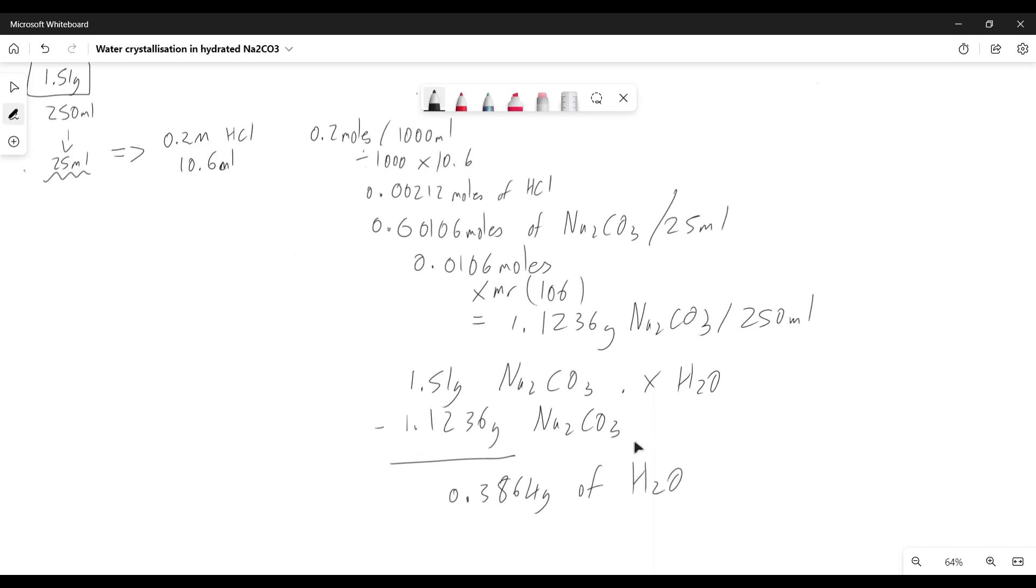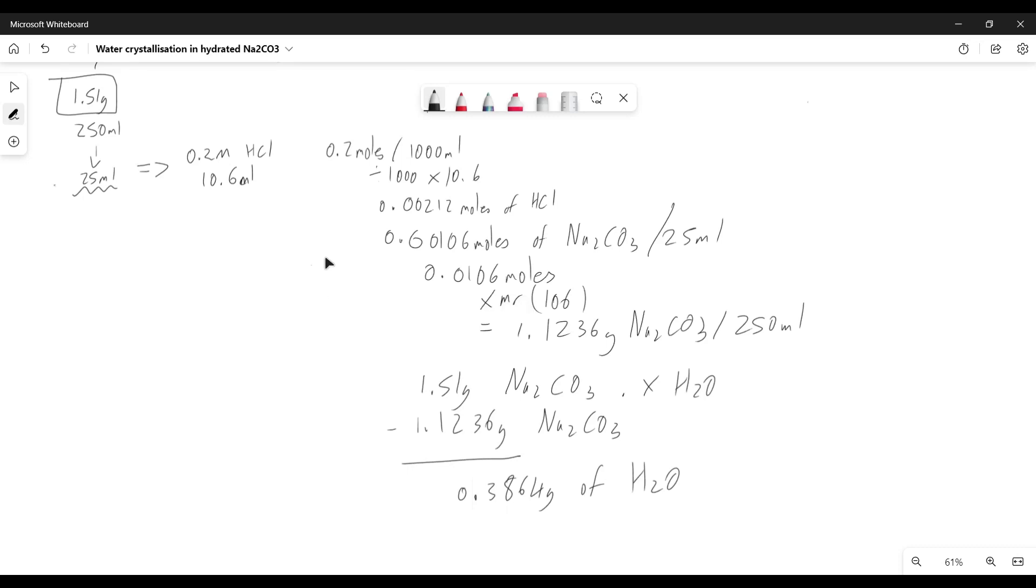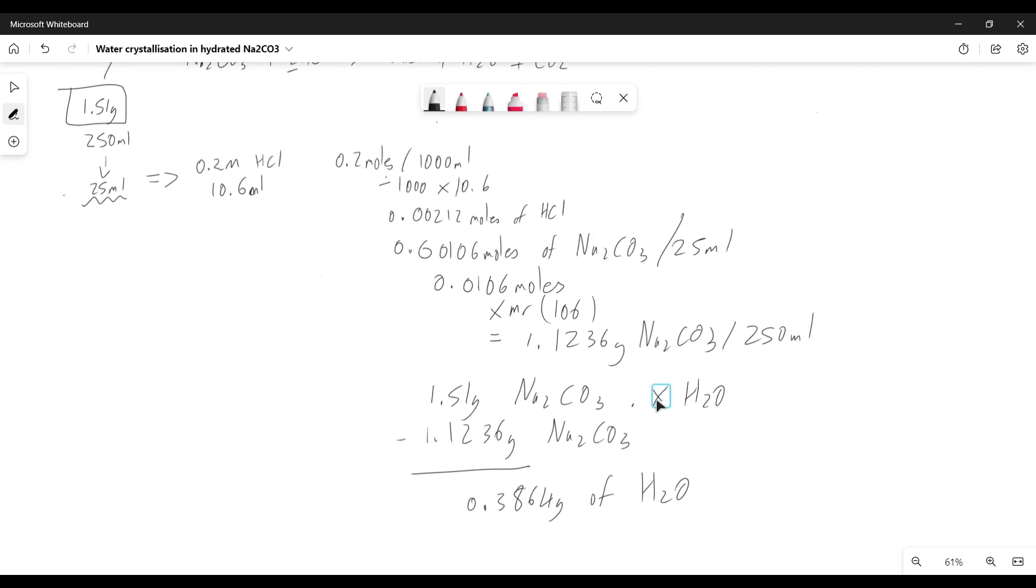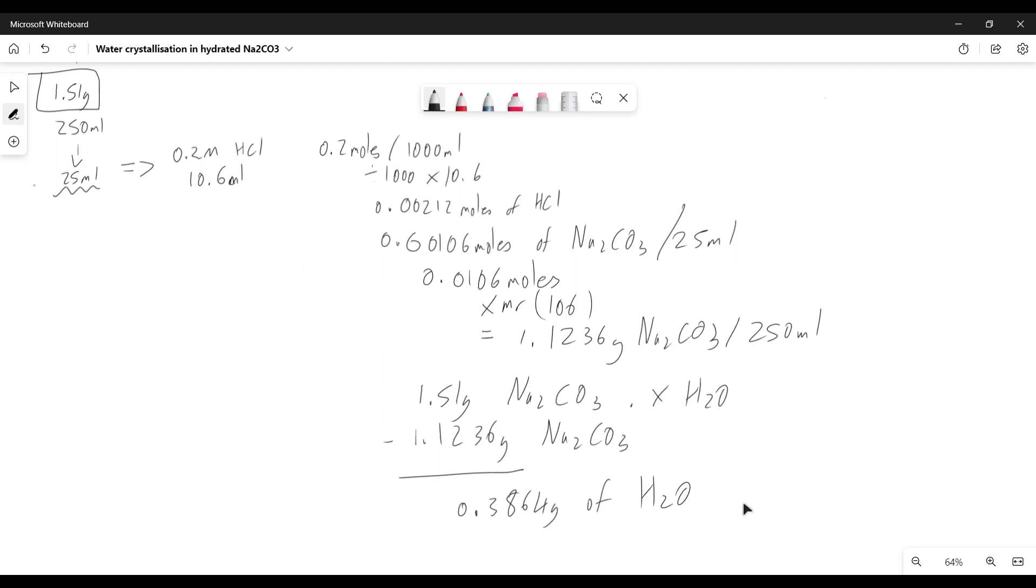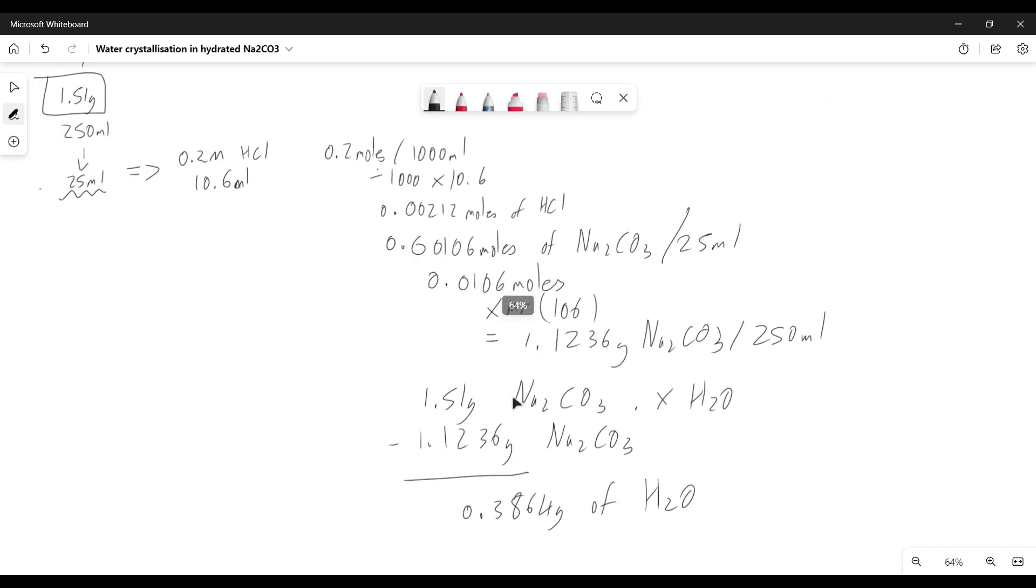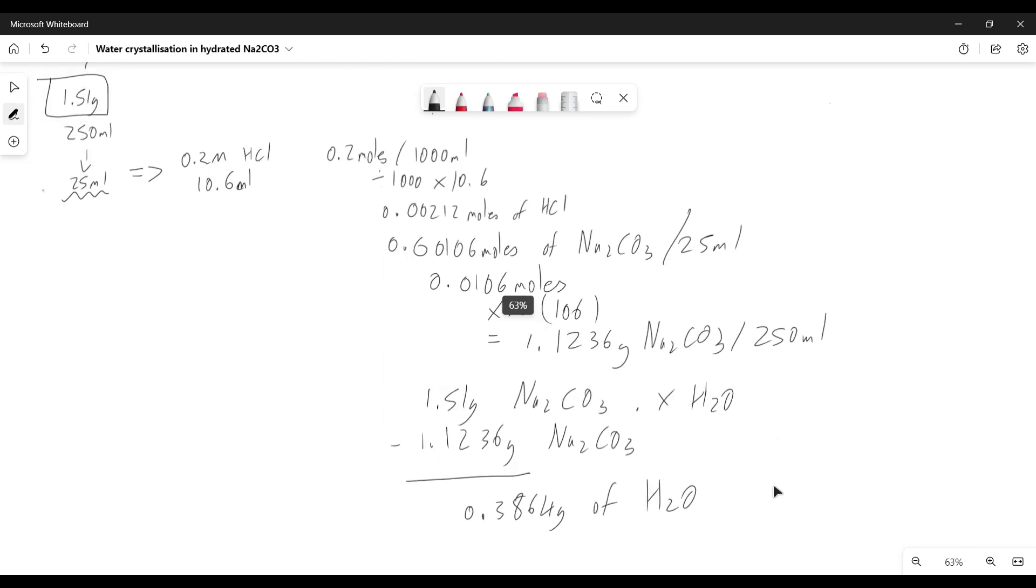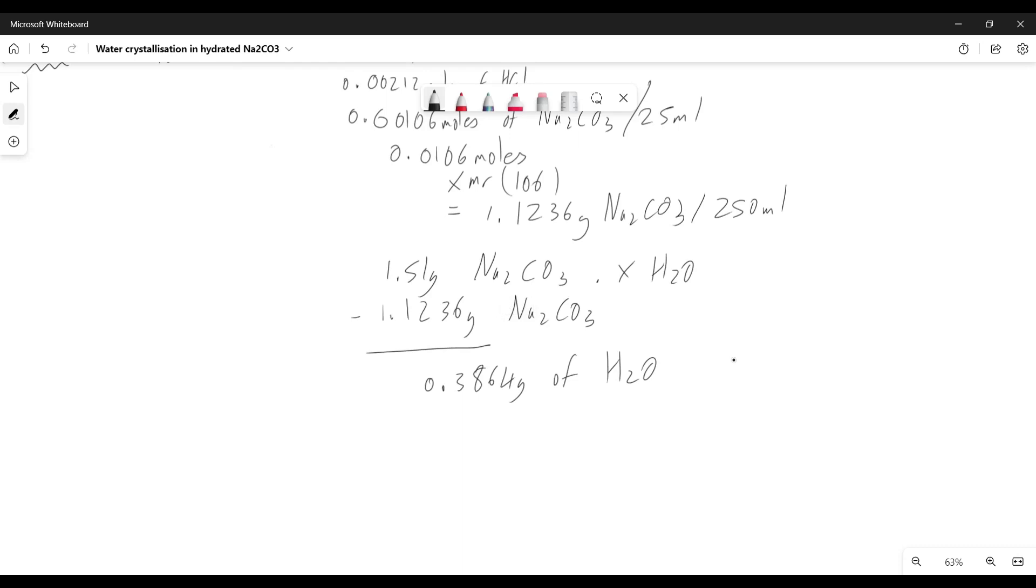How can we use this information to find out x, to find out how many molecules of water are associated with this? Well, to find out how many molecules are associated, we need to go back to moles. How can we go from these grams to moles? We can divide by the relative molecular mass. In the case of water, two hydrogens and oxygen, this is 18.